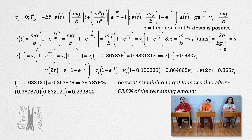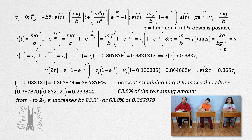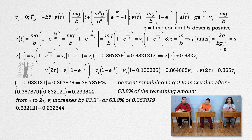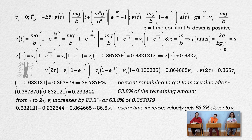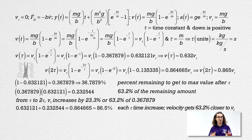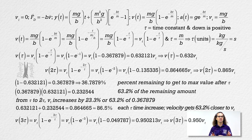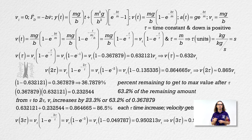That represents roughly 63.2% of the remaining 0.367879. So, from one to two time constants, the terminal velocity increases by roughly 23.3%, which is 63.2% of the remaining 36.8%, which when added to the original 0.632121, we get 0.864665, or roughly 86.5%. Each increase in time of one time constant represents an increase in the velocity such that it gets 63.2% closer to its terminal velocity or maximum velocity. After three time constants, the velocity has reached 95.0% of its terminal velocity — again, an increase which gets the velocity 63.2% closer to the maximum velocity. Each time change of an integer multiple of the time constant gets the value 63.2% closer to the maximum value.